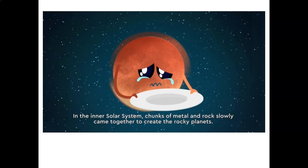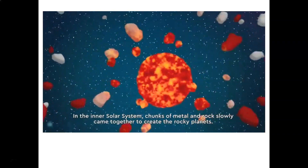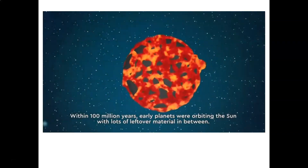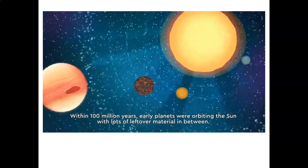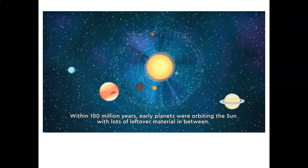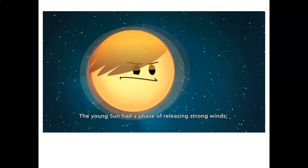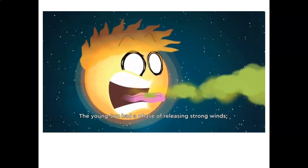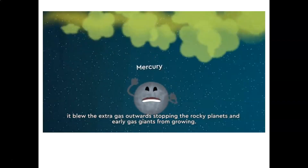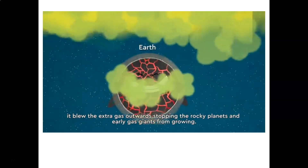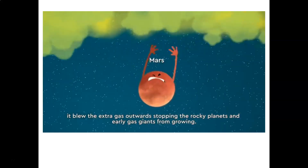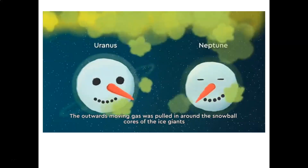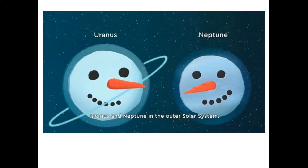In the inner solar system, chunks of metal and rock slowly came together to create the rocky planets. Within 100 million years, early planets were orbiting the sun with lots of leftover material in between. The young sun had a phase of releasing strong winds, blowing the extra gas outwards and stopping the rocky planets and early gas giants from growing.